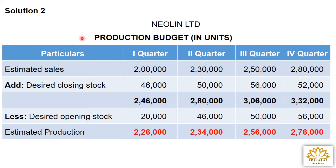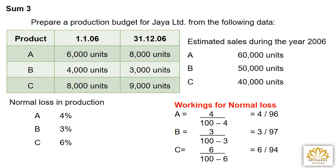That is the solution for the second sum. Sum 3: Prepare a production budget for Jaya Limited. 3 columns are given: Product, Opening Stock (1/1/2006), Closing Stock (31/12/2006). Product A: opening stock 6,000; closing stock 8,000. Product B: opening stock 4,000; closing stock 3,000. Product C: opening stock 8,000; closing stock 9,000.